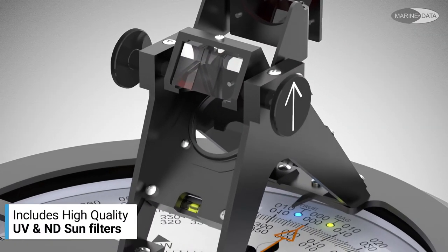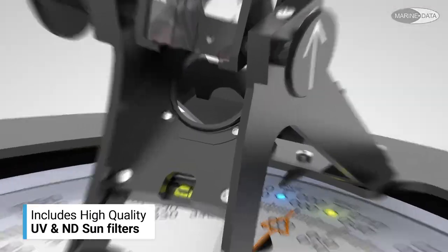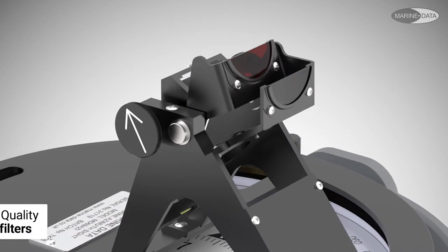It's a Thomson pattern azimuth sight and includes sun filters to assist the observer in taking terrestrial and celestial compass bearings.